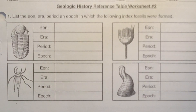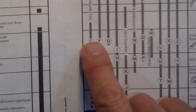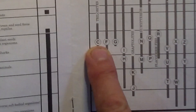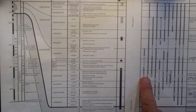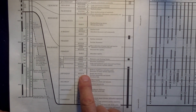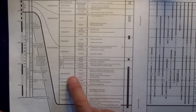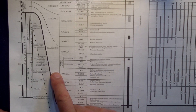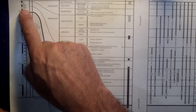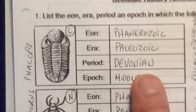The first organism matches up with letter C — the Phacops. Finding letter C on the list, if I go across I find this is Middle Devonian, so the epoch would be Middle, the period would be Devonian, the era is Paleozoic, and the Eon is Phanerozoic. So our answer for the first box would be: Middle, Devonian, Paleozoic, Phanerozoic.